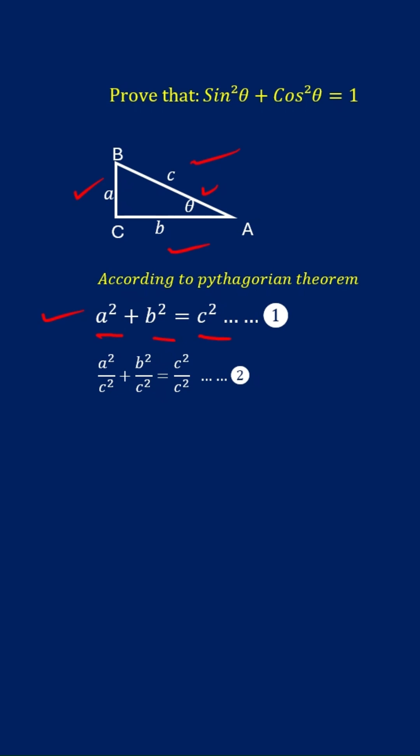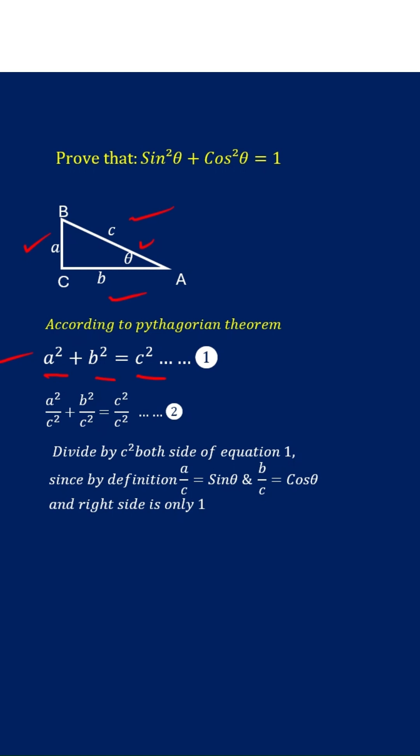Divide this Pythagorean equation by c² on both sides of the equation. Since by definition a/c = sin θ and b/c = cos θ, and the right side is only 1, that is the reason we divide equation 1 by c².